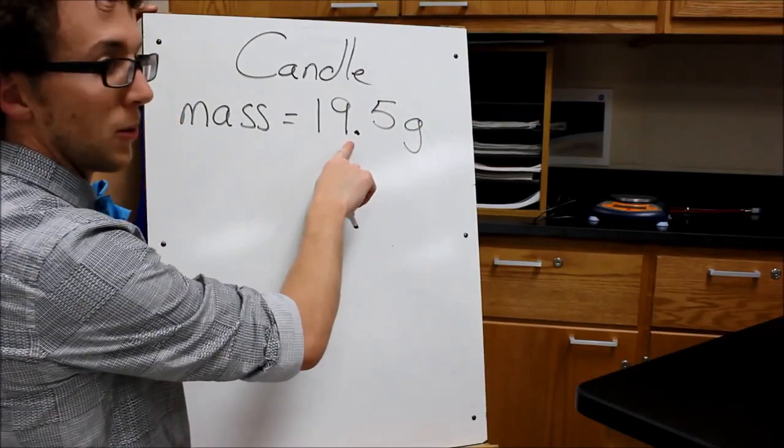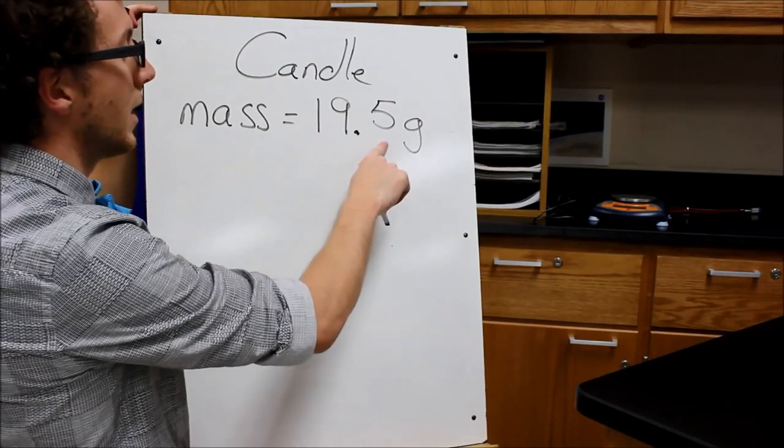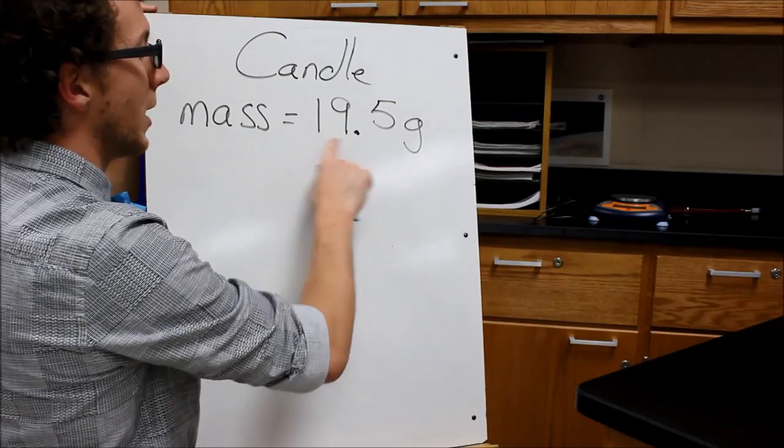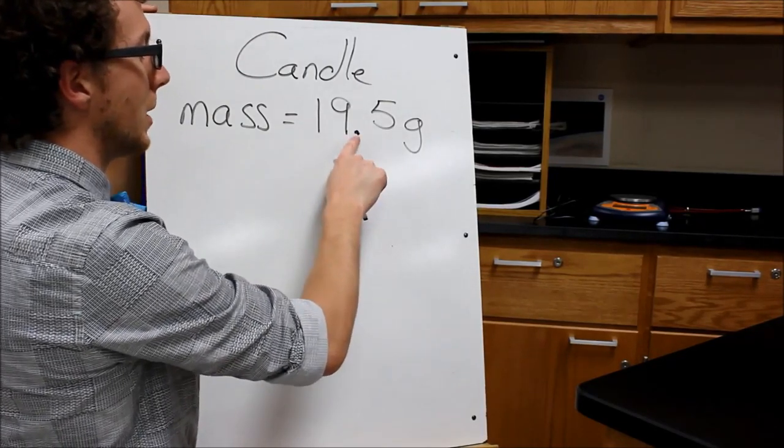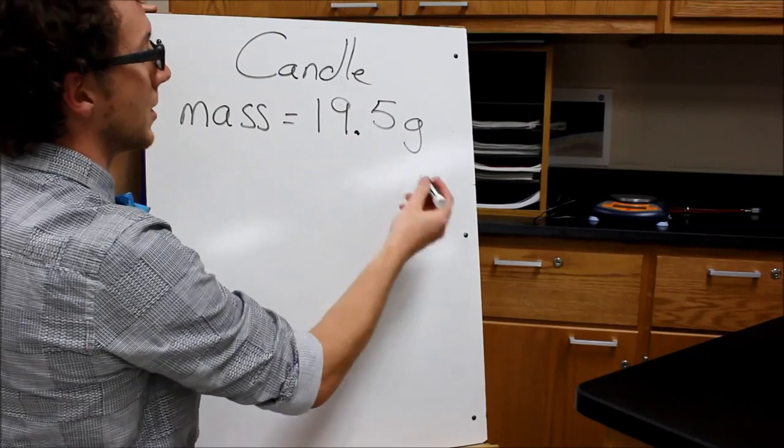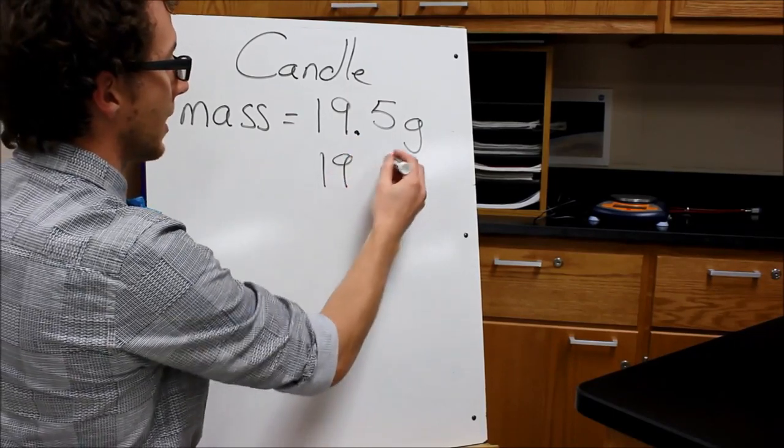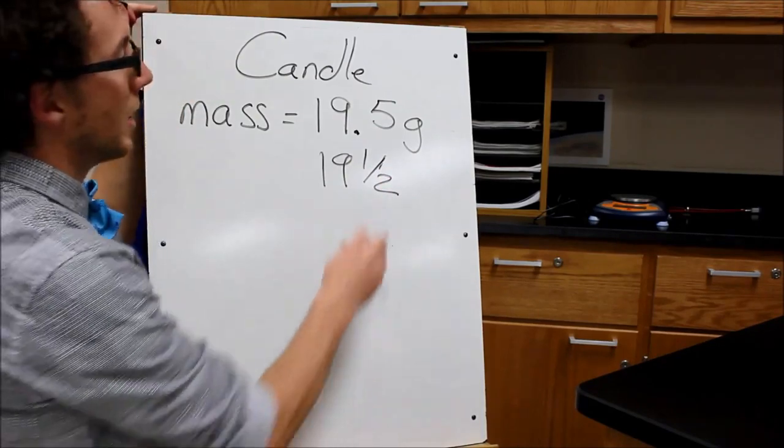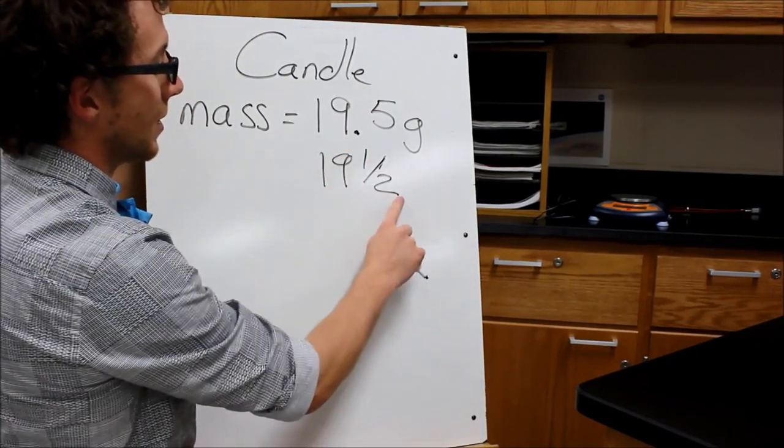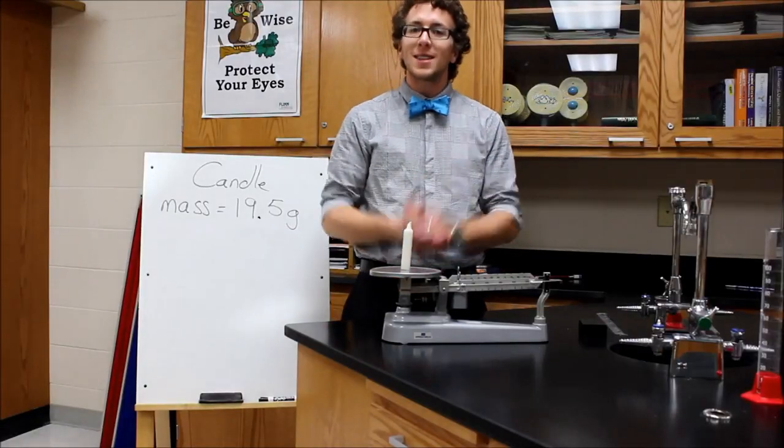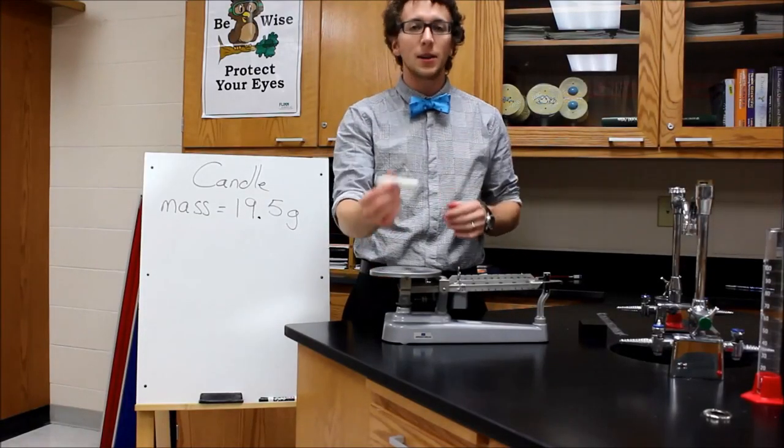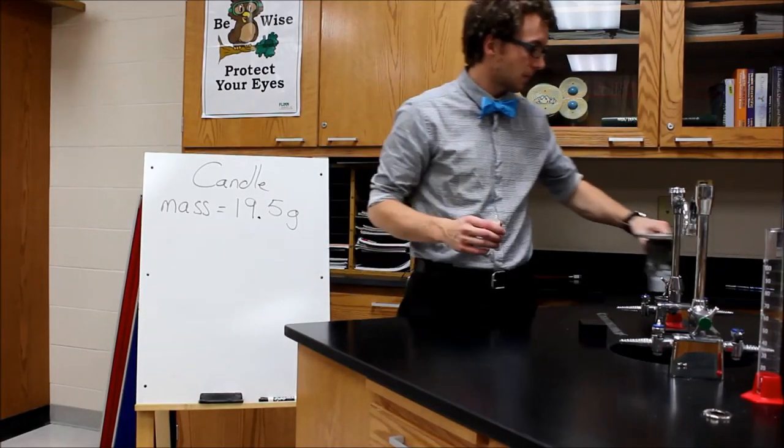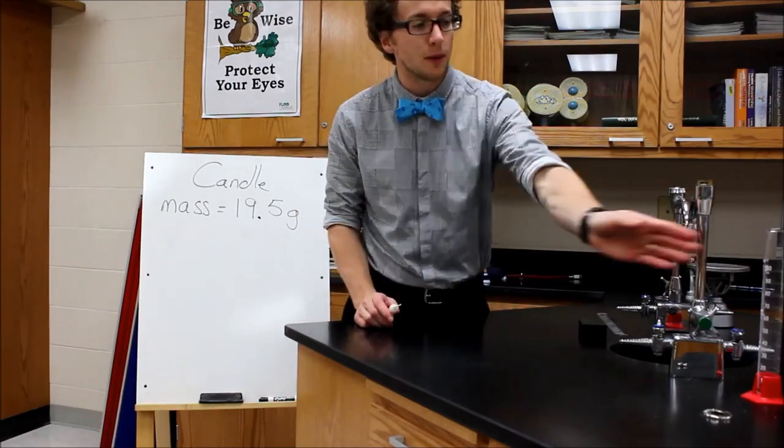So the mass of my candle so far is 19 and a half grams, 19.5. I want to write it this way because that will allow me to multiply this a little easier versus if I were to write it 19 and one half. It's just less confusing. So try to write it this way. Now that we've found the mass of the candle we can move this off to the side and now we can work with the volume.